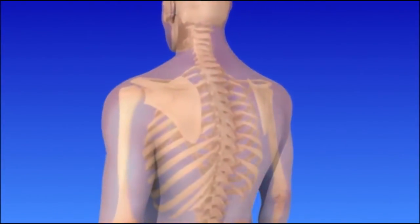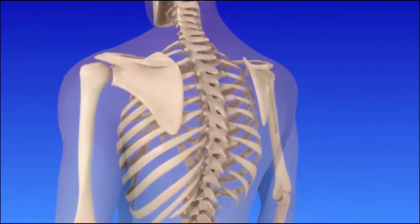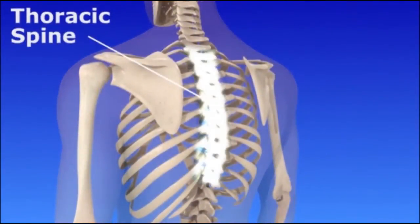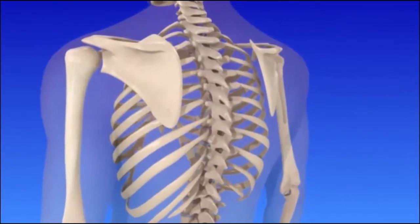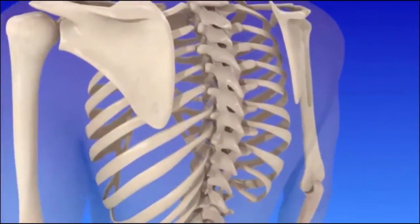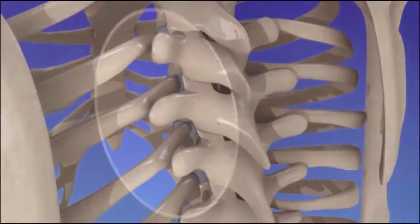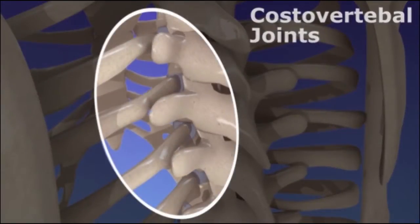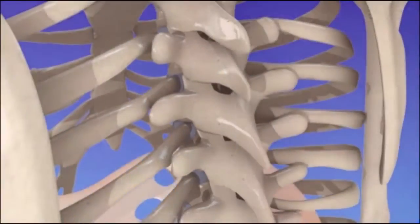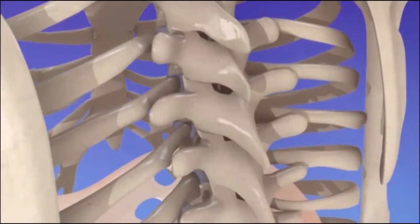The spine in the upper back area is called the thoracic spine. The ribs are joined to the thoracic spine by costovertebral joints. The joints allow your ribs to move when you breathe.